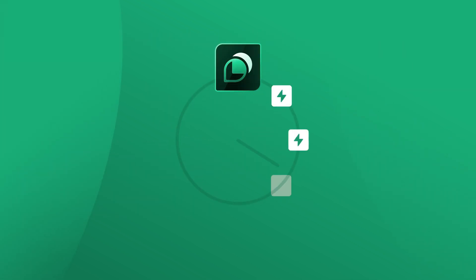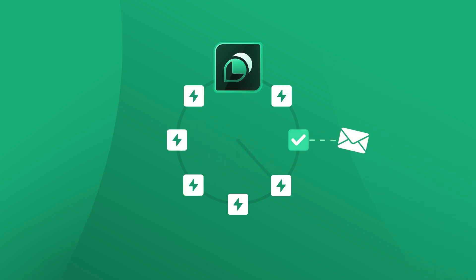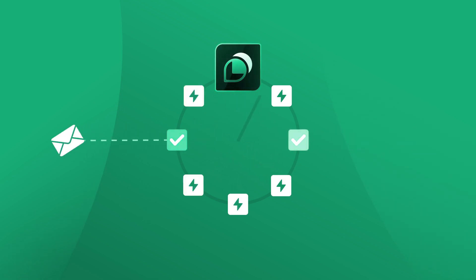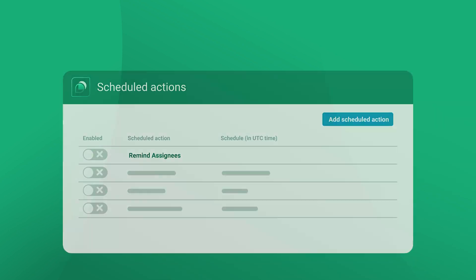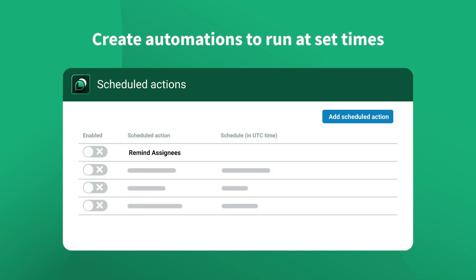What if you want to escalate any issues still stuck in progress for longer than 24 hours? By scheduling a post function to run after a predefined period, you can easily automate this task too, with JMWE.